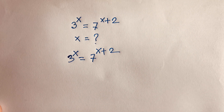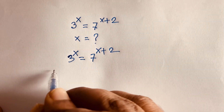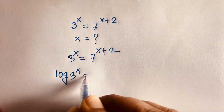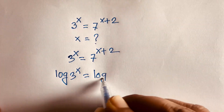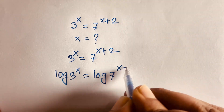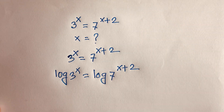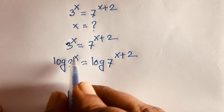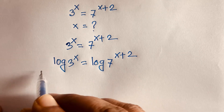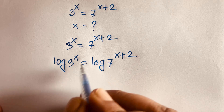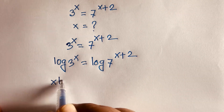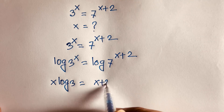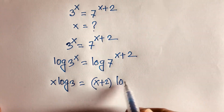I apply log to both sides, so I can say log of 3 power x is equal to log of 7 power x plus 2. Then this equation becomes x log 3 is equal to x plus 2 times log 7, because I move the exponent to the front according to logarithm rules.